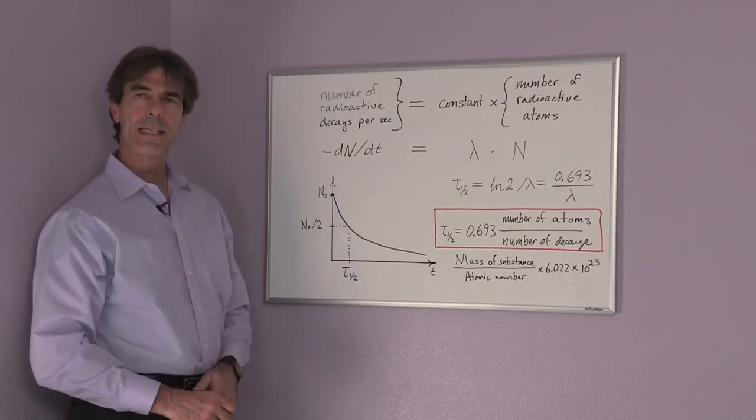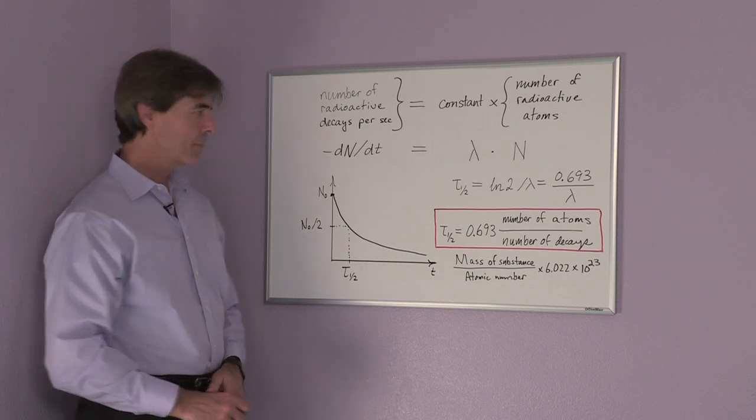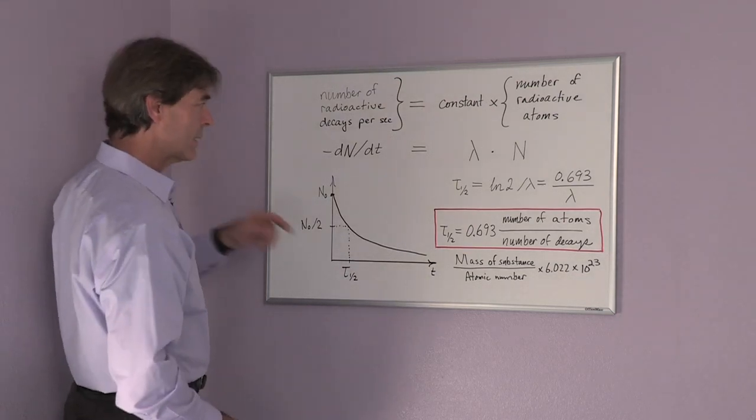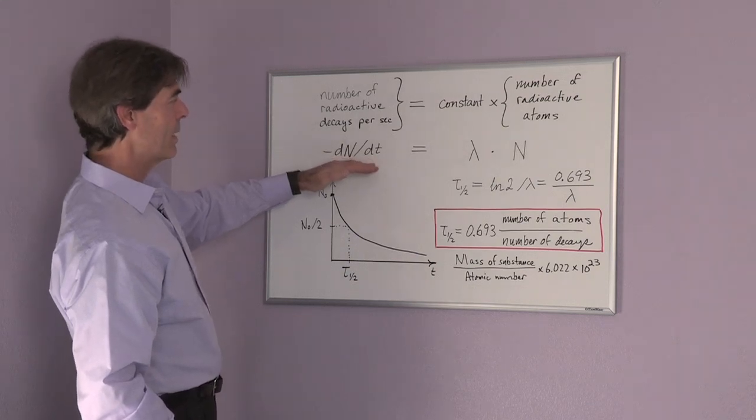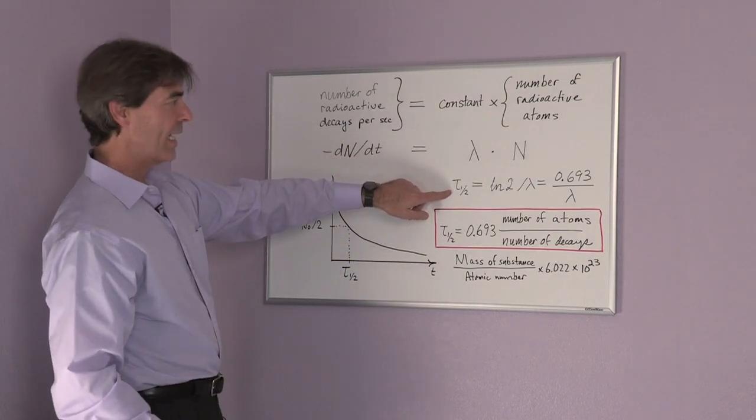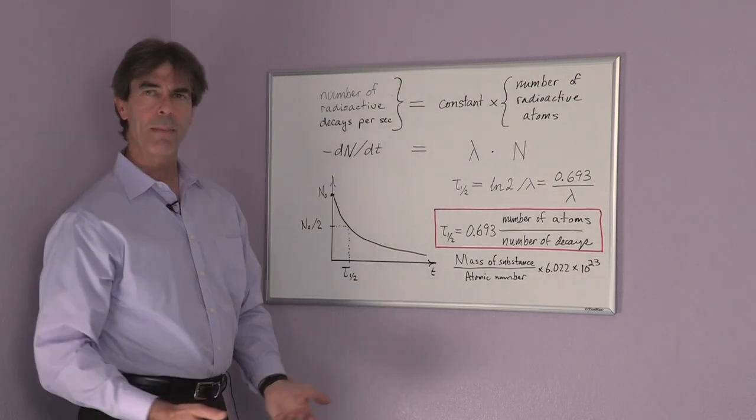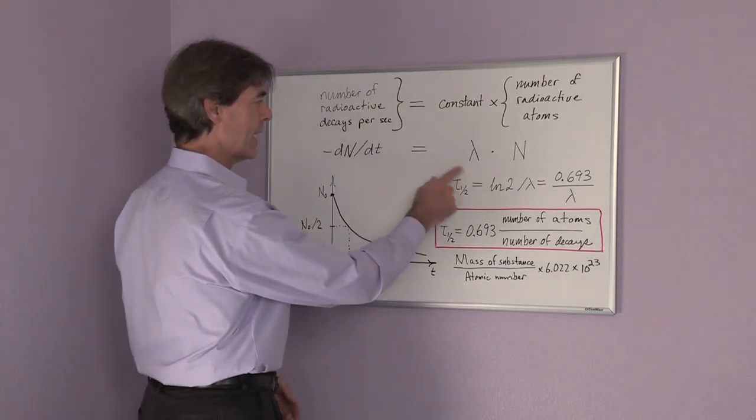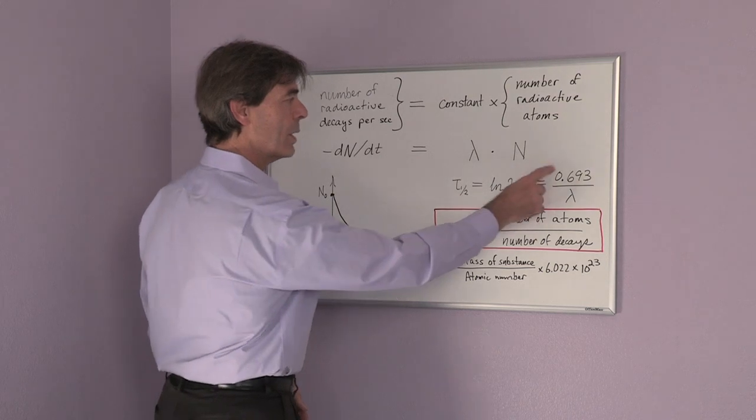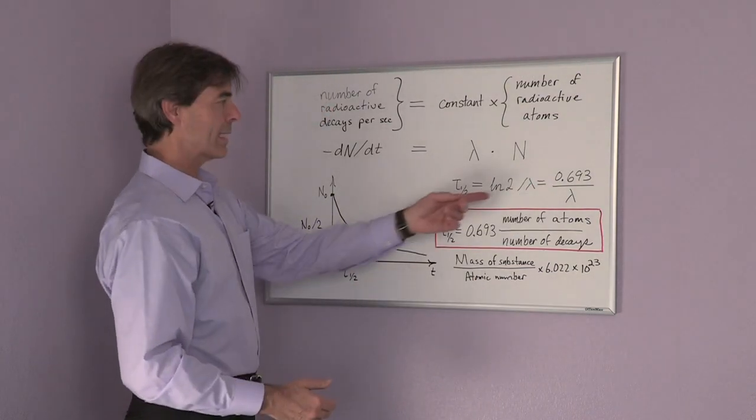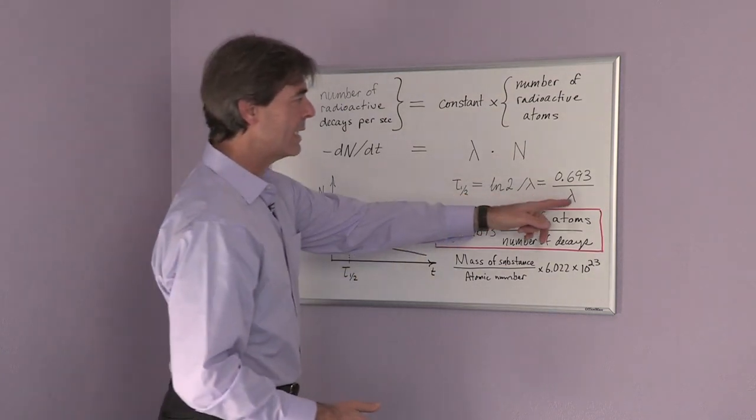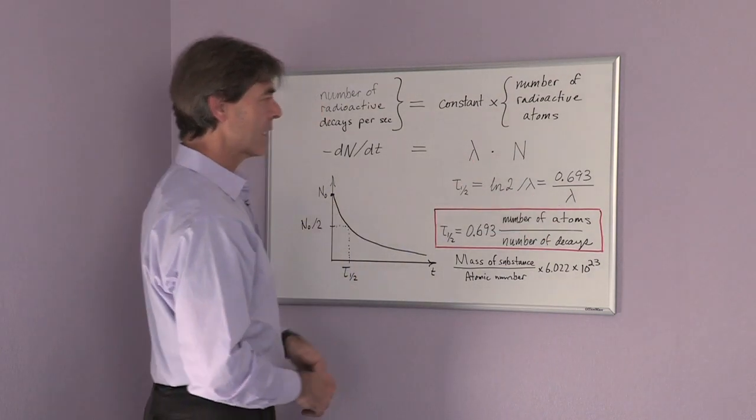Let's use the solution of this equation to determine τ, the half-life. I'm not going to do the math, but it turns out that the half-life is equal to 0.693 approximately, because that's the natural log of 2 divided by the constant lambda.